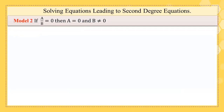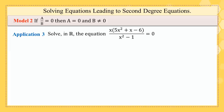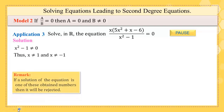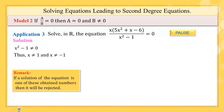Now let us go to the second model: if a/b = 0, then a = 0 and b ≠ 0. Application: solve in ℝ the equation x(5x² + x - 6) / (x² - 1) = 0. The solution: first you must start with the denominator — state that x² - 1 ≠ 0, so x² ≠ 1, meaning x ≠ 1 and x ≠ -1. Remark: if any solution equals one of these values it will be rejected.